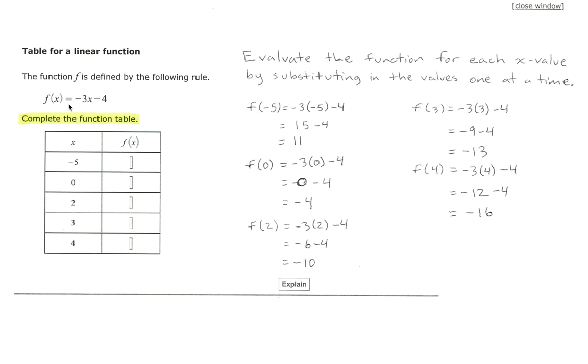We are given the following x values: negative 5, 0, 2, 3, and 4, and we're going to substitute each one of these into our function one at a time.